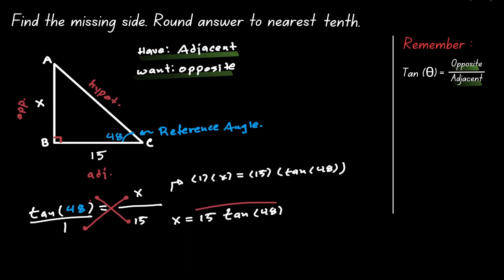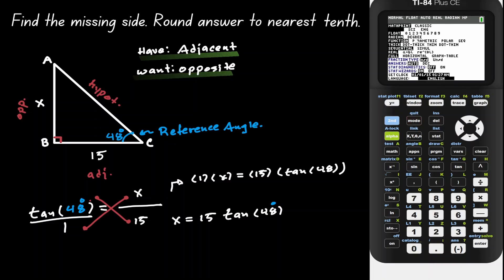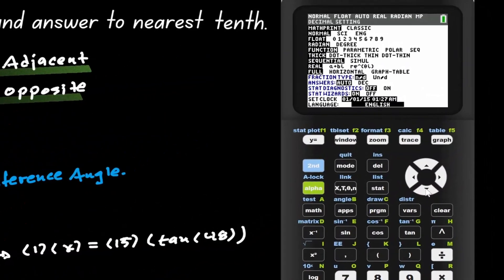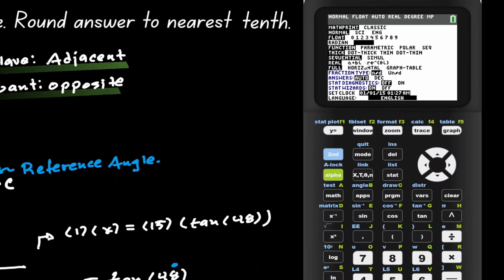Once we have this expression, we can use our calculator to find the value. We need to make sure that our angle is in degree mode. Press the Mode button, and make sure it's set to degrees. Notice it's on radian, so let's go down, move right to highlight degree, and press Enter. Now the calculator will read it in degree mode.